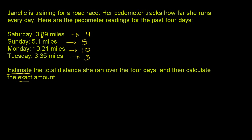If we add them up: 4 plus 5 is 9, 9 plus 10 is 19, 19 plus 3 is 22. So my estimate is that she ran 22 miles over the four days.